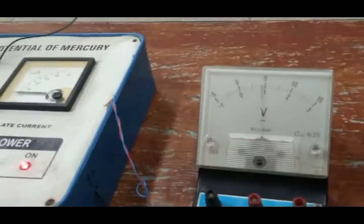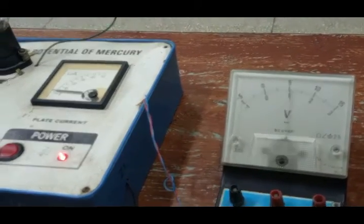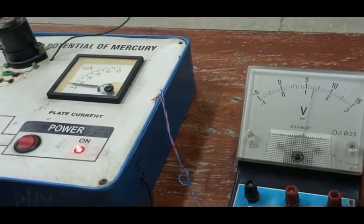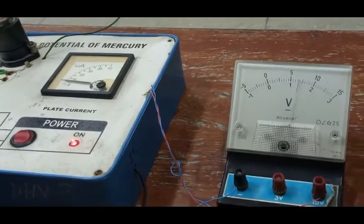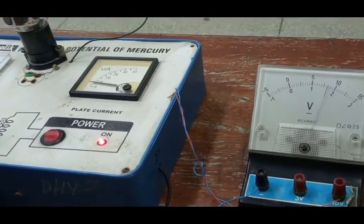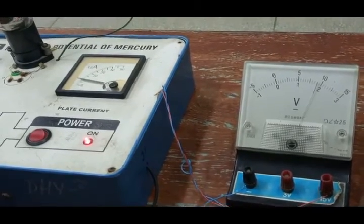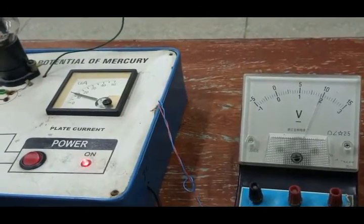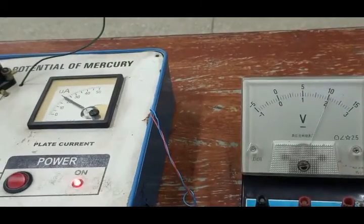Like from 10 onwards we will calculate the readings with 0.5 volts difference, because close to the ionization potential the current increases rapidly with increase in voltage. You can see beyond 10 it is increasing more.